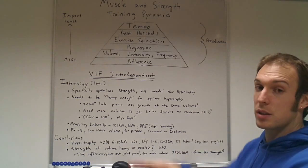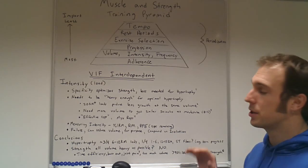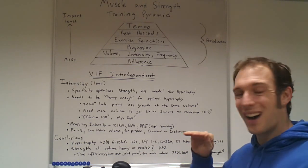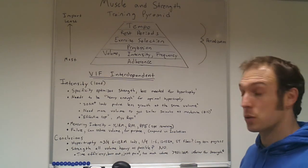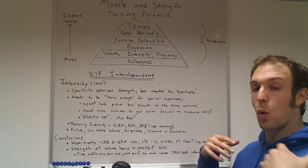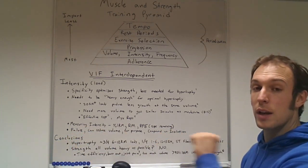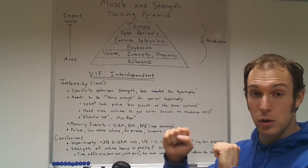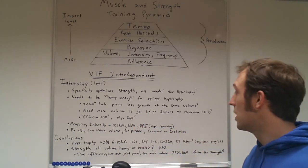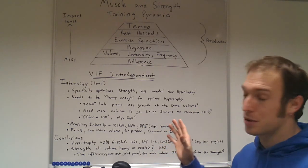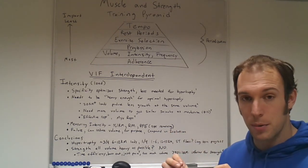There will be a bunch of references in the comments below. From Campos we know that high reps, when you equate volume, are not as effective for producing hypertrophy as moderate and high loads, which are about equal. From a more recent Schoenfeld study, if one group does 20 to 35 rep max sets and another does 8 to 12, the high-rep group needs to do 2 to 3 times as much volume to get about the same growth. So to get the same growth at high reps, you need to almost double or triple the volume. You need to be heavy enough for hypertrophy.